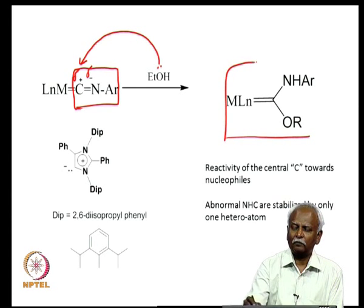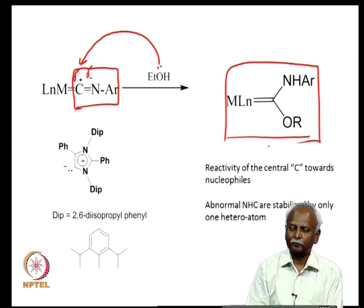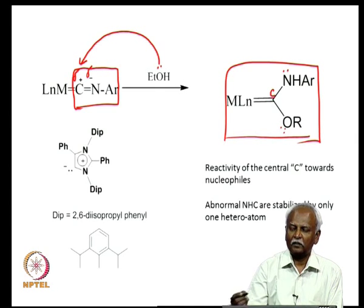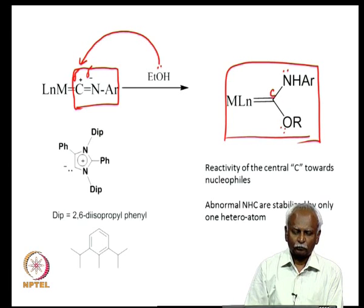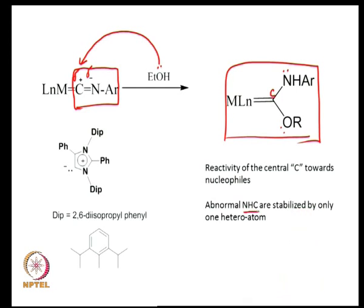This nucleophilic attack generates a different molecule — a disadvantage of isocyanides is that they very often react with the solvent or nucleophile. However, the resulting molecule is often a stable species because you have a carbene carbon stabilized by two lone pairs, just like N-heterocyclic carbenes are stabilized by two nitrogen atoms. The abnormal NHC carbon was stabilized by only one nitrogen and still formed a nice metal complex.